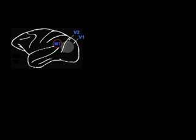These directionally selective cells in V1 project to an area that specializes in motion processing, called area MT. MT has been the central focus for studies on visual motion perception, and is known to integrate information from V1 to generate global motion percepts. Anatomical studies have shown that there is a second pathway from V1 to MT that goes through area V2.